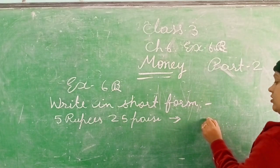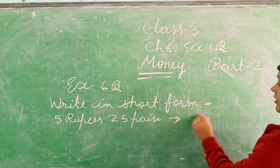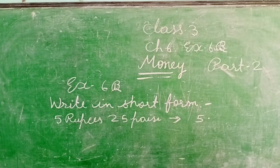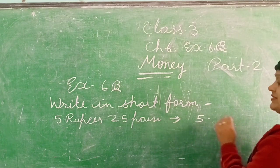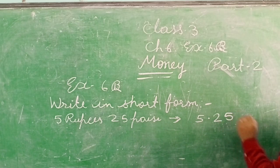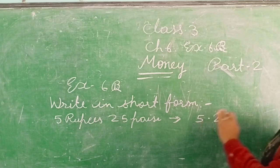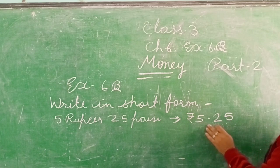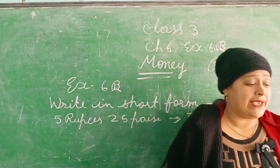Ab isko bachche short form mein likhenge. Sabse pehle ek dot lagao. Left side mein 5, aur right side mein kya lagega? 25 paise. So 5 rupees 25 paise in short form is written as Rupees 5.25.